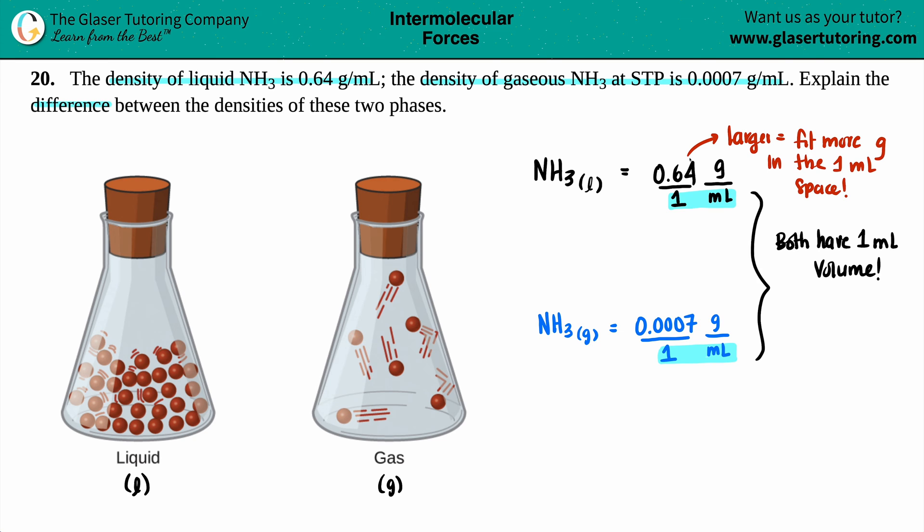And more grams, 0.64 grams. Since the 0.007 grams is less, it's smaller, this means that you could fit less grams in the one milliliter space. But now why is that? Explain that difference.